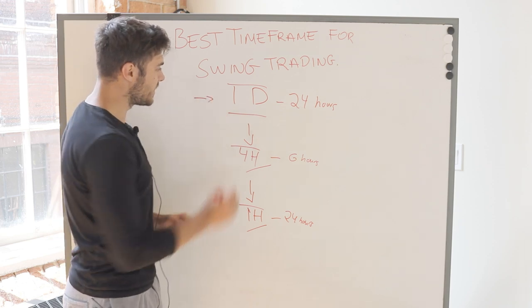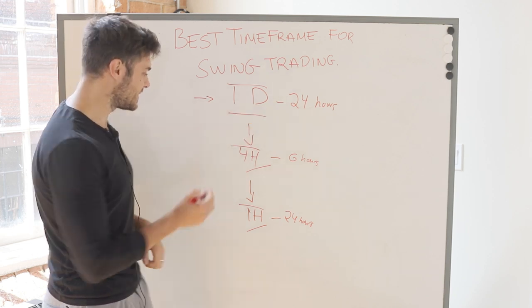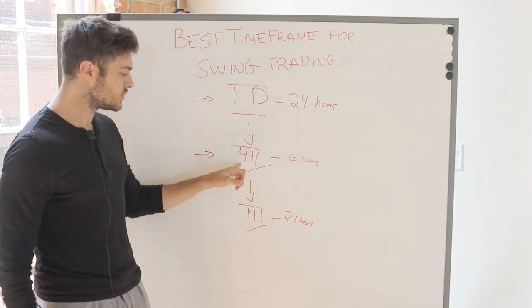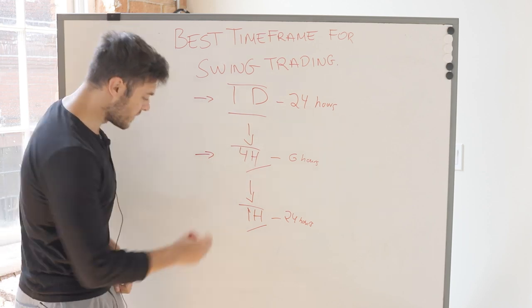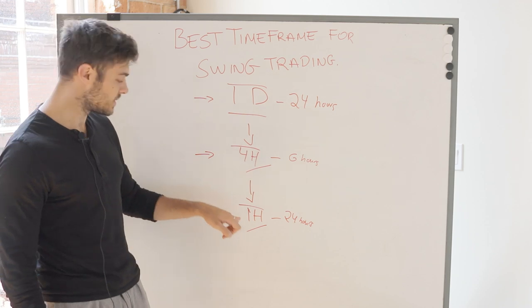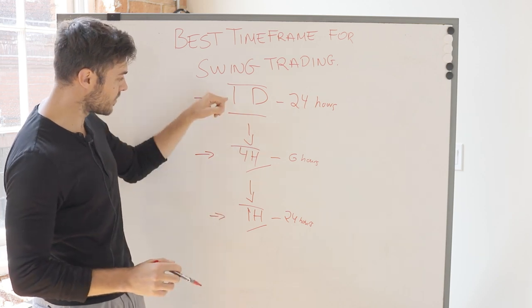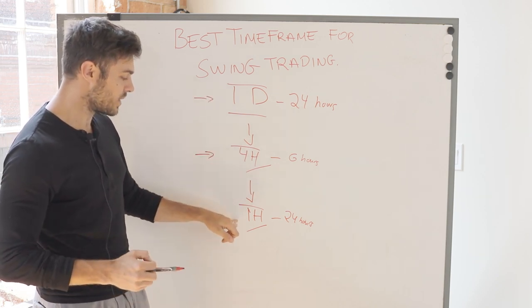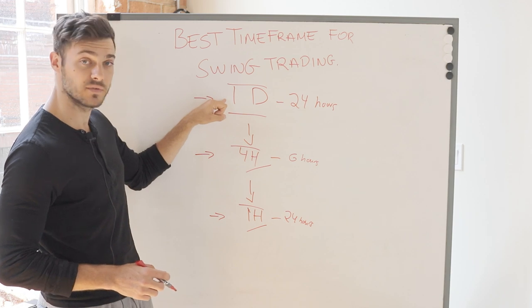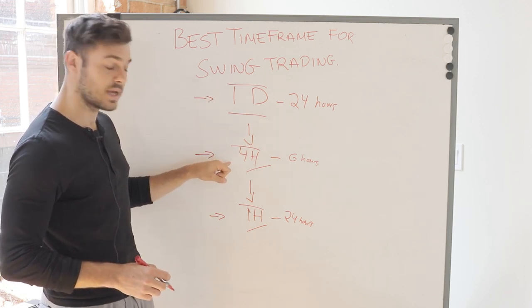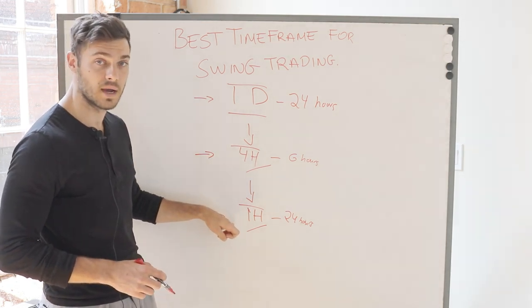Start on the daily time frame to identify the overall trend, direction, and key levels of support and resistance. The four-hour time frame is used to identify and refine those daily support and resistance levels. Then the one-hour time frame is your execution time frame — the most granular part of the analysis — where you get your trend direction and support and resistance levels from the daily, wait for candlestick or rejection patterns on the four-hour, and execute on the one-hour.